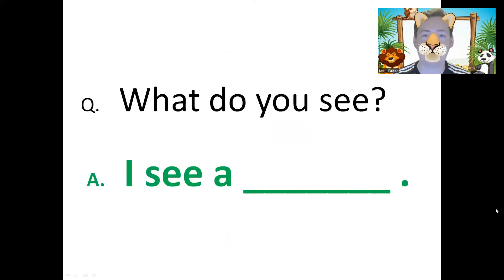Very good. Okay, so what do you see? I see a tiger. I see a tiger. What do you see? I see an elephant. I see an elephant. Perfect. And the cat — what color is it? It is red. It is red. Good.